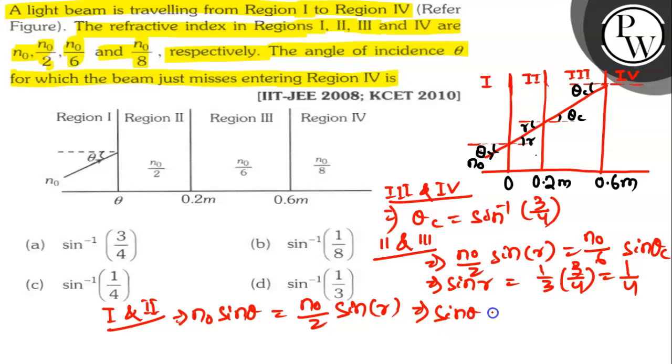So, here sin θ is equal to 1 by 2 into 1 by 4 which is 1 by 8.